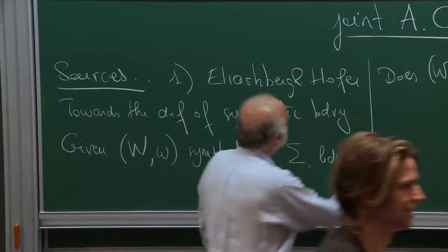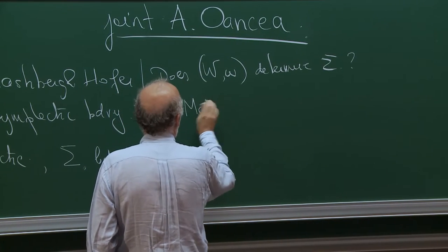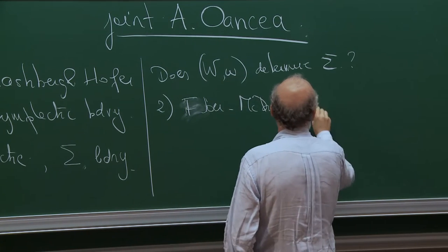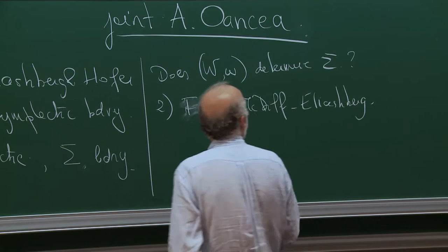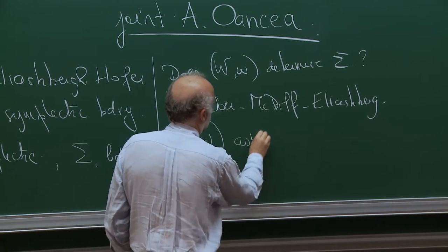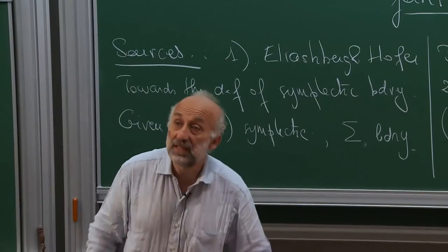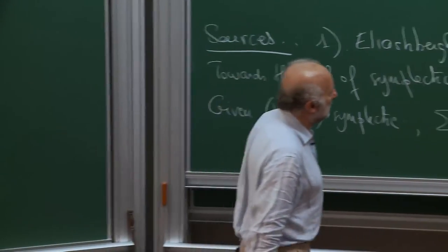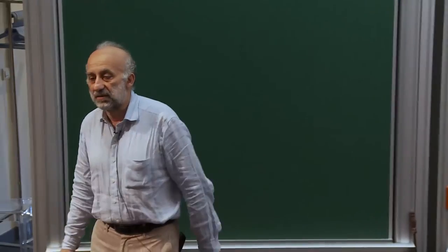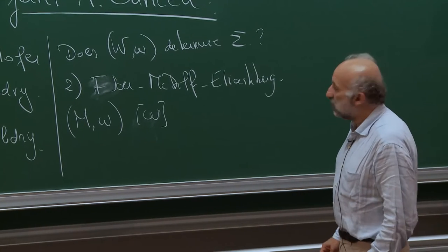And the second source is a result by Floer, Douza, and Elie Aschberg — Yasha — about the following: does the interior determine the boundary? That is, if M omega is symplectomorphic to R^{2N} with the standard symplectic form, does the interior determine the boundary as a contact boundary with the contact structure?